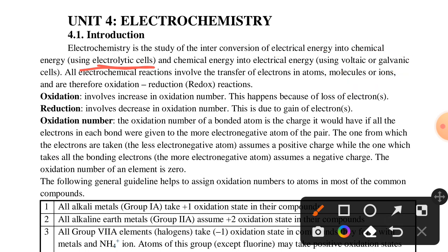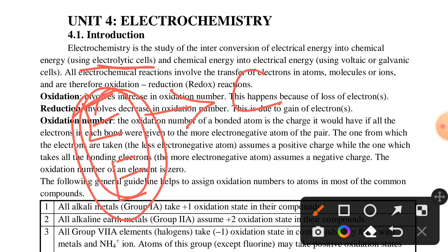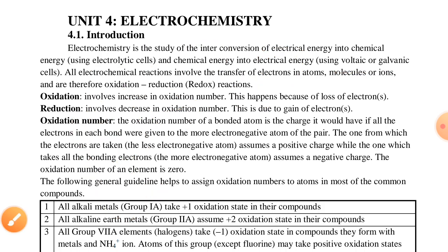From electrical energy to chemical energy by using electrolytic cells — remember EE stands for electrolytic and electrical energy. And from chemical energy to electrical energy using galvanic or voltaic cells.